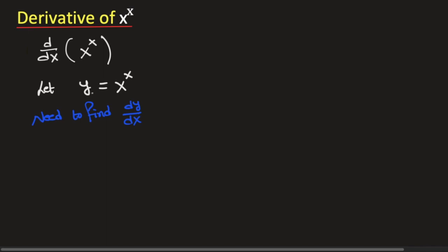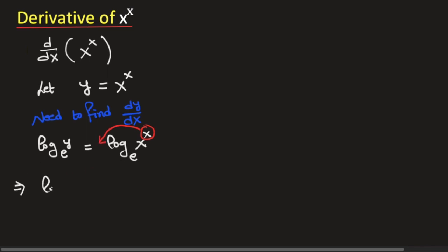Now taking logarithm of both sides with base e, we obtain that the logarithm of y with base e is equal to the logarithm of x to the power x with base e. By the logarithm rules, this x will come in front of the logarithm. So we have ln(y) is equal to x times ln(x).